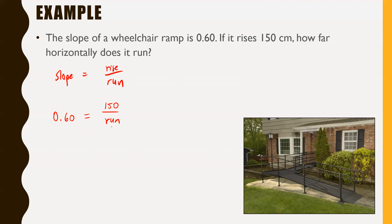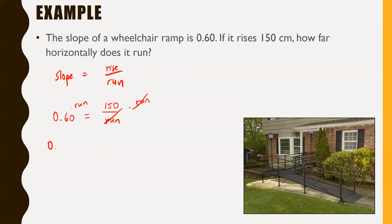If we're looking for run and run is dividing 150, we want to get run all by itself. Since we have 150 divided by run, multiply both sides by run. On the right side, the times-by-run undoes the divide-by-run, knocking both out. On the left side, since we do the same to both sides to keep things balanced, we get: 0.60 times run equals 150.